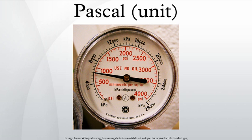Hectopascal and millibar units: meteorologists worldwide have for a long time measured atmospheric pressure in bars, which was originally equivalent to the average air pressure on Earth. The bar was divided into 1,000 millibars to provide the granularity meteorologists require. After the introduction of SI units, many preferred to preserve the customary pressure figures. Consequently, the bar was redefined as 100,000 pascals, which is only slightly lower than standard air pressure on Earth.